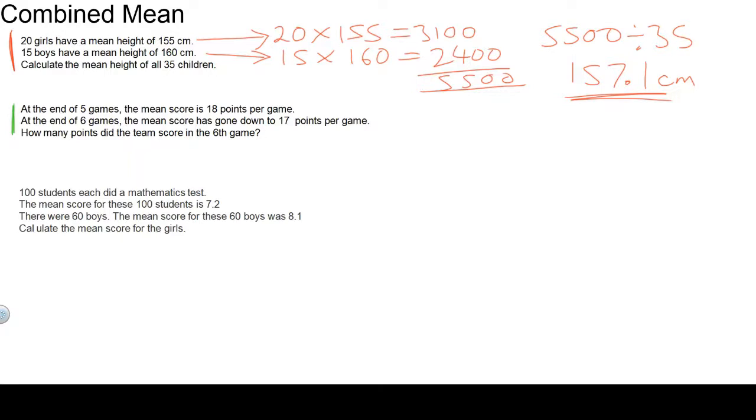Second question. At the end of five games, the mean score is 18 points. At the end of six games, so one extra game has been played, the mean score has now gone down to 17 points per game. We need to work out how many points that team scored in the sixth game.